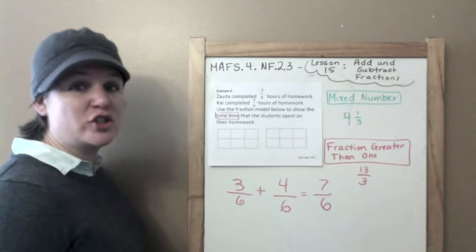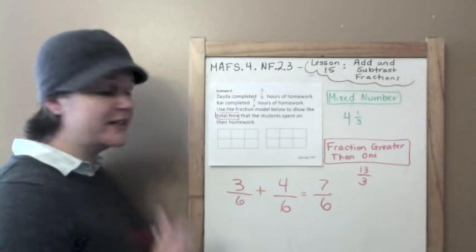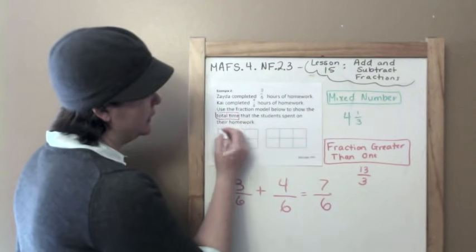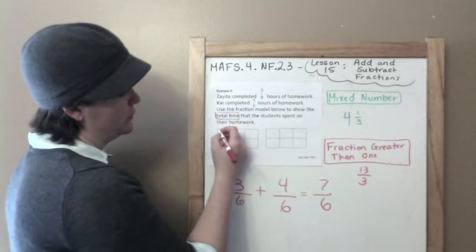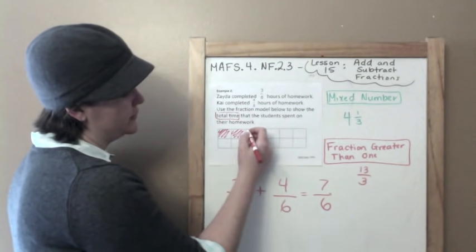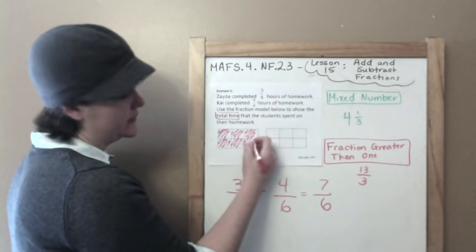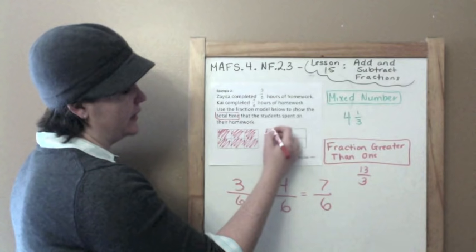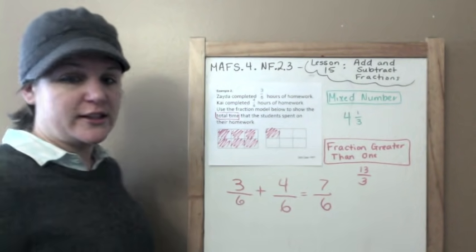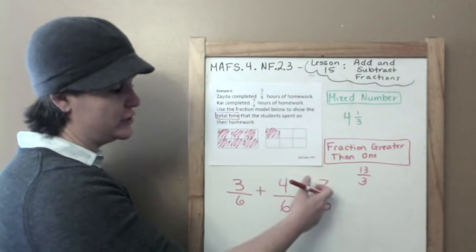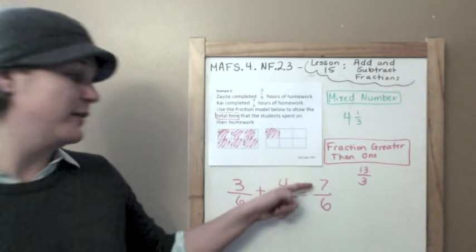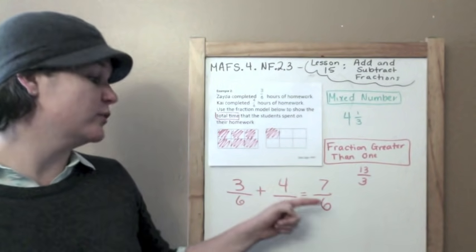So this would be, this is out of 6, so this would be 1 sixths, 2 sixths, 3 sixths, 4 sixths, 5 sixths, 6 sixths, and then over here 7 sixths. So this is a fraction, as you can see, greater than 1, because our numerator is greater than our denominator.